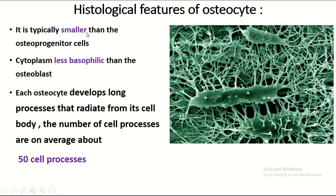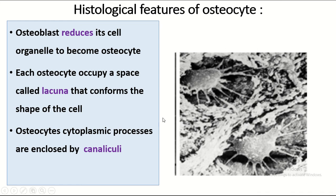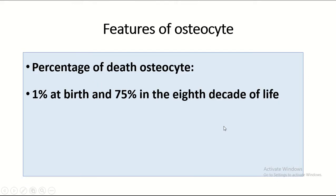Histological features of the osteocyte: it is typically smaller than osteoprogenitor cells, with cytoplasm less extensive than osteoblasts. Osteocytes develop long processes that extend from the cell body — on average 50 cell processes per cell. The cell body is located within the lacunae, and the cytoplasmic processes are located within the canaliculi.